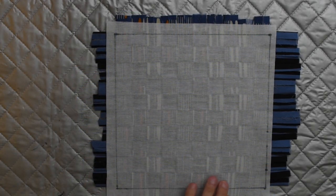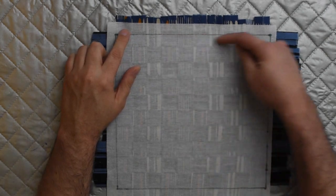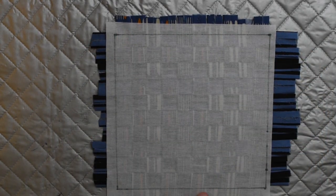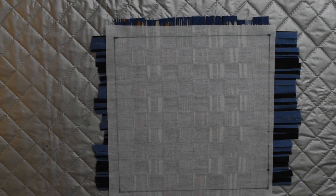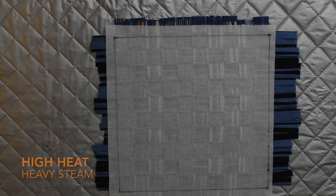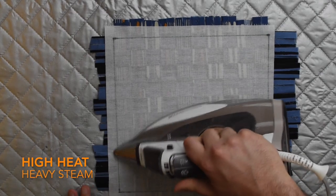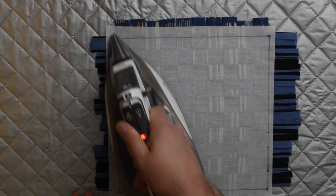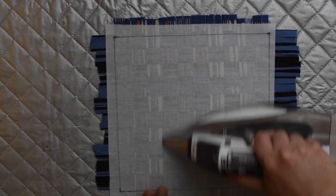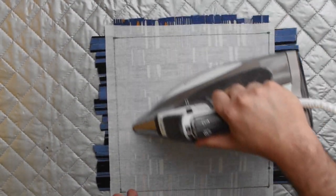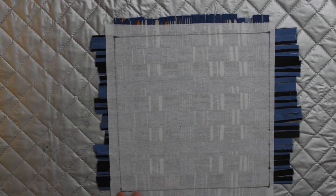One more thing before you take this over to your sewing machine to stitch along this stitch line: flip it over to where the weave is on the bottom, put it on an ironing surface, and then turn your iron up to high heat, high steam, to fuse it from the other side. This will really get that interfacing onto the weave, so it's not going anywhere.